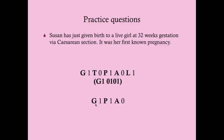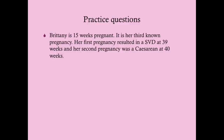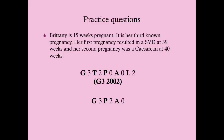Britney is 15 weeks pregnant — her third known pregnancy. Her first pregnancy was a spontaneous vaginal delivery at 39 weeks; her second was a cesarean section at 40 weeks. She is G3, T2, P0, A0, L2 — on her third pregnancy, two term deliveries, no preterms, no abortions, two live infants. Under GPA: G3, P2, A0.